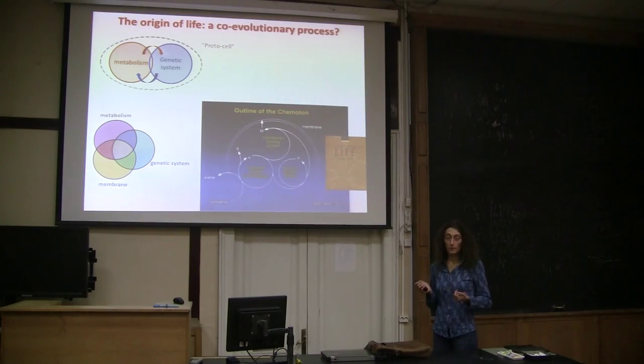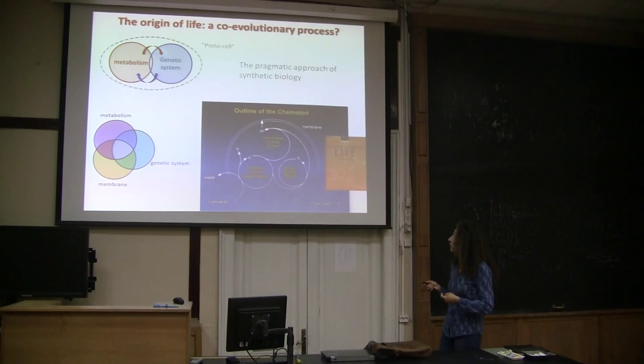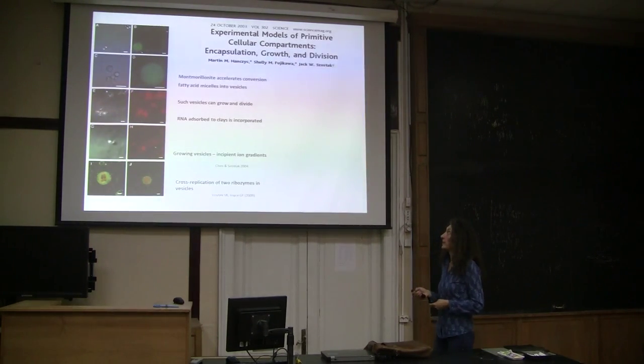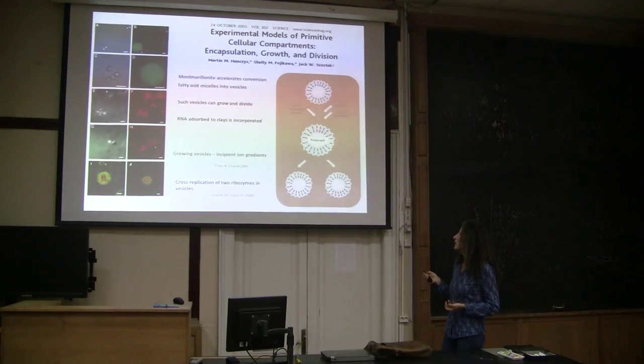So this has been proposed theoretically by some people, like Tibor Ganti in the 70s, but only from a theoretical point of view. And this is also the way that some people are taking now in practice for doing what we call synthetic biology, trying to reconstruct life in a test tube. And just as a brief example, I will mention the work by Jack Szostak, but also Gerald Joyce, using vesicles that can encapsulate RNA. For instance, they can grow and divide spontaneously, and they can form incipient ion gradients. And when you put two different ribozymes inside, they have managed to cross-replicate spontaneously.